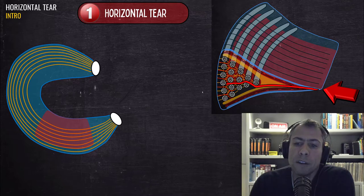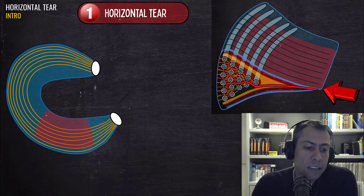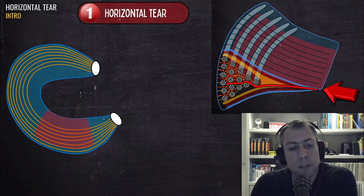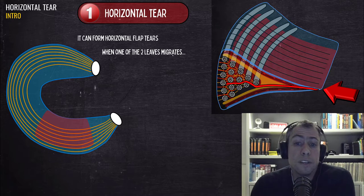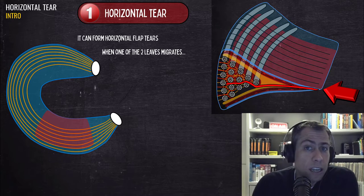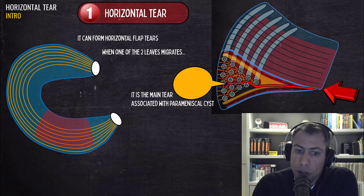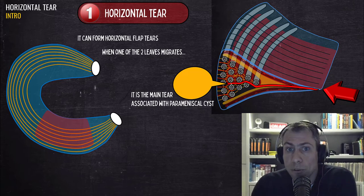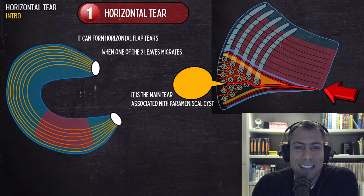Here we can see the horizontal tear in the axial plane — viewed from above, we can see the meniscus and the horizontal tear at the posterior horn of the medial meniscus. When one of the two leaves migrates, it can form horizontal flap tears, which I'll cover in another video. Importantly, the horizontal tear is the main tear associated with parameniscal cysts. If you see a horizontal tear, look for a parameniscal cyst, and vice versa — they commonly occur together.